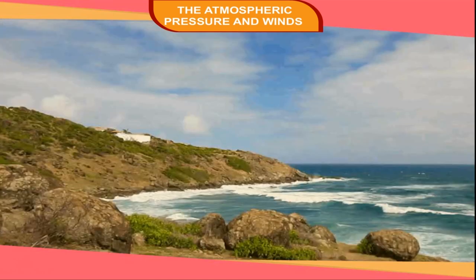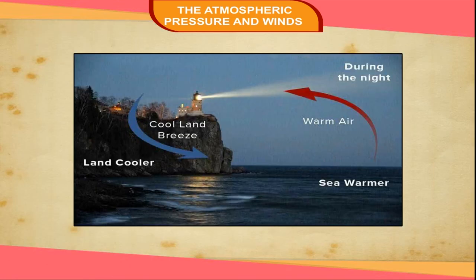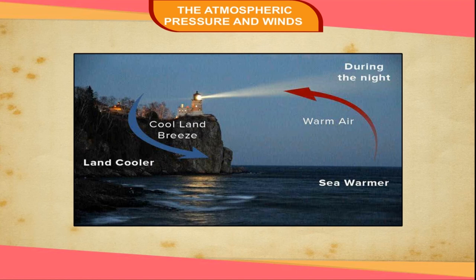Sea and Land Breezes: Water takes longer than land to get heated and cool down. During the day, the land becomes hotter than the sea. The air above the land becomes hot and rises, leading to a low pressure over the land. Since the air above the sea is cooler, the pressure above the sea is higher. So, the cooler air from the sea moves towards the land during the daytime. This is called sea breeze, which brings down the temperature in coastal areas during the day. At night, the land cools down much faster than the sea. The air above the sea is warmer and lighter, and the warm air above the sea rises. So the pressure above the sea is lower than the pressure above the land, and therefore air from land blows out towards the sea. This is known as land breeze.